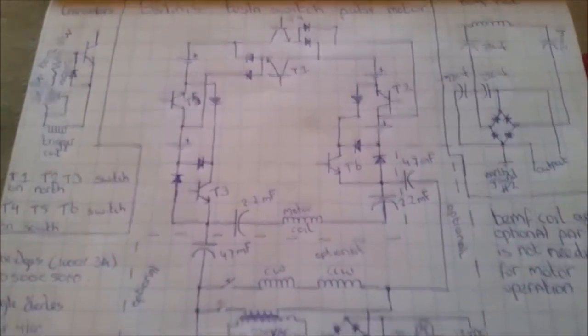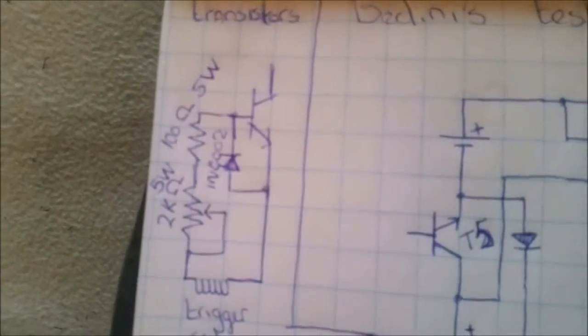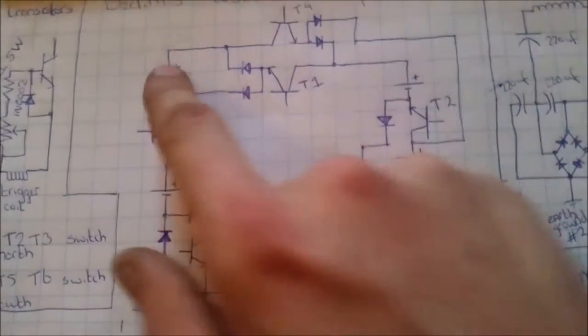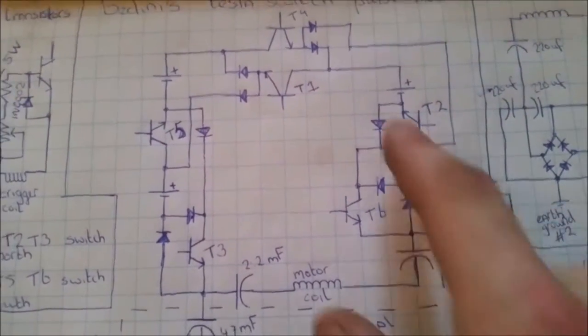little BMF coil charging up this battery. Now here we got the schematic of the device. This is the main device. We've got six transistors switched in a Bedini style like this, and it switches four batteries in here